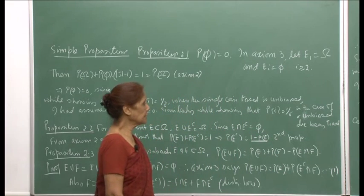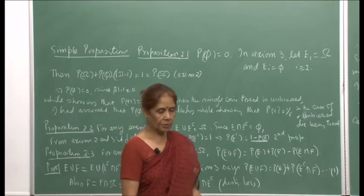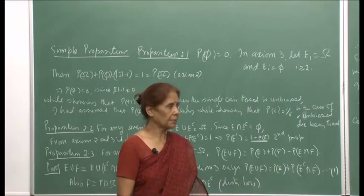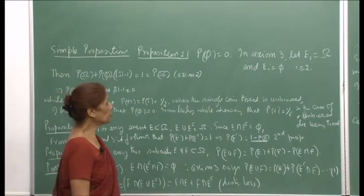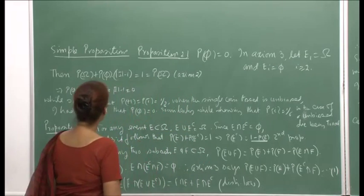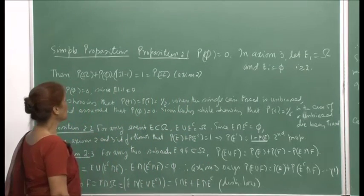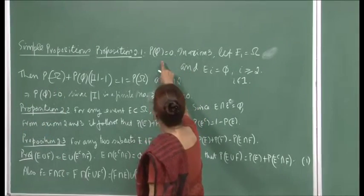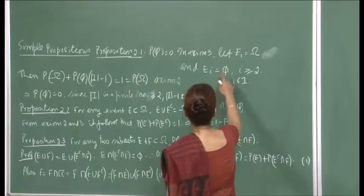After having defined the axioms of probability and showing how a probability function can be obtained, let me now derive a few propositions using these axioms. The topic I am going to talk about is simple propositions. The first is proving the proposition that P(∅) = 0.